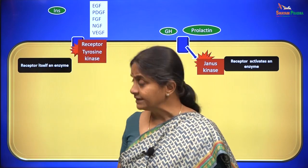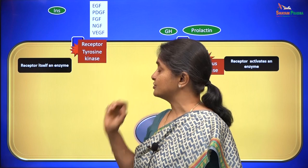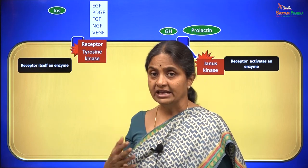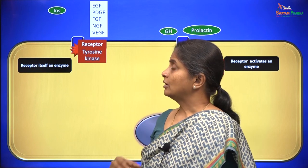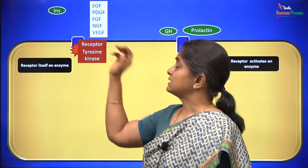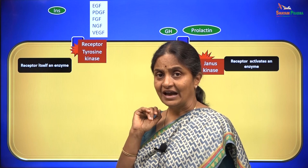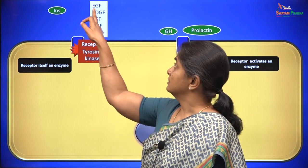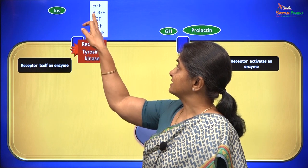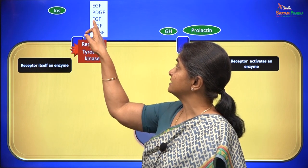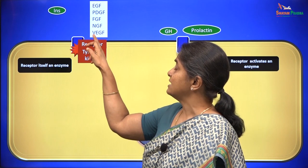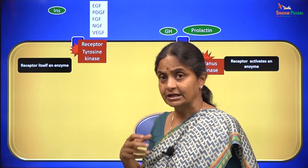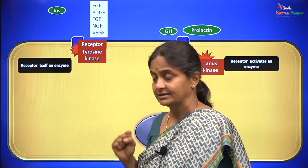If you look at the ligands which bind to receptor tyrosine kinases, other than the hormone insulin, these are paracrine or autocrine factors: the epidermal growth factor, platelet derived growth factor, fibroblast growth factor, nerve growth factor, vascular endothelial growth factor, and insulin-like growth factor.